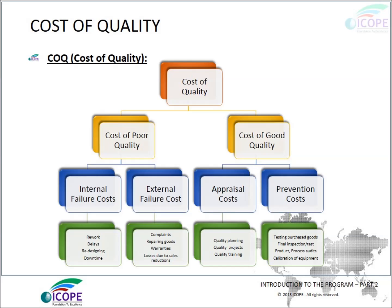Cost of quality: there are two ways of measuring it — the cost of poor quality and the cost of good quality. The cost of poor quality includes internal failure cost and external failure cost. Internal failure costs may include rework and delays. External failure costs may include complaints and repairs. The cost of good quality includes appraisal costs (such as quality planning and quality process) and prevention costs (such as training and development).